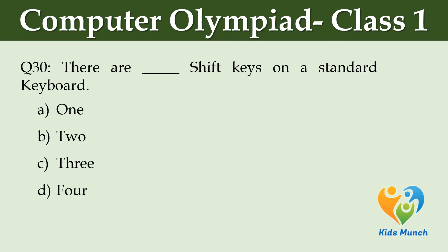There are dash Shift keys on a standard keyboard. Option A: One. Option B: Two. Option C: Three. Option D: Four.